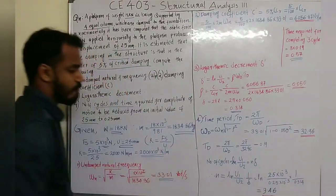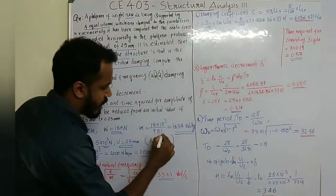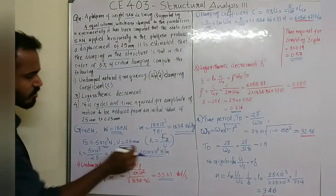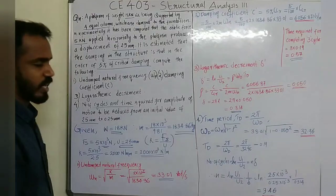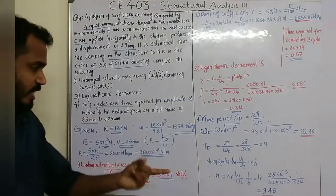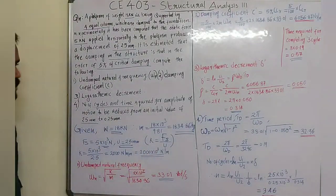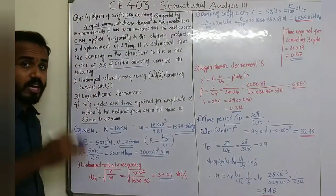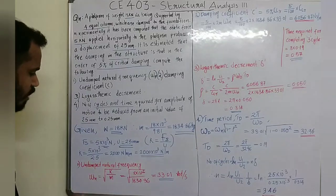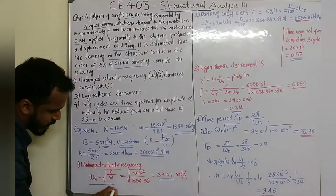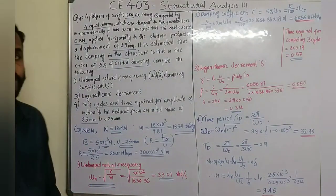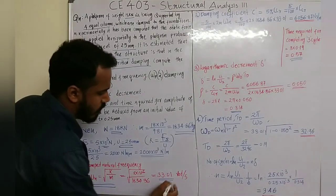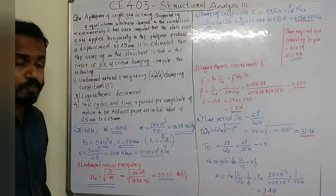Stiffness k is equal to Fs divided by u, giving 2 into 10 raised to 6 N/m. For the undamped natural frequency, omega n is equal to root of K by M, substituting K value and M value gives omega n equal to 33.01 radians per second.